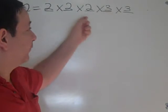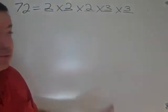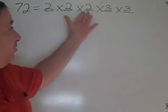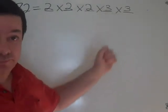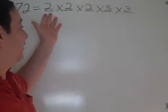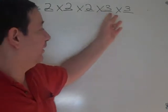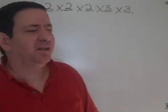You might get these five different numbers in different order. You might say 3 times 2 times 3 times 2 times 2. But nonetheless, you'll be multiplying three 2's by two 3's.